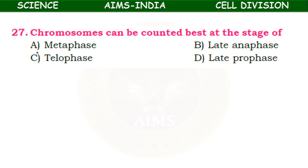Chromosomes can be counted best at which stage — metaphase 1, late anaphase, telophase, or late prophase? We already discussed this in the onion root tip question: metaphase is the right stage to count chromosomes.